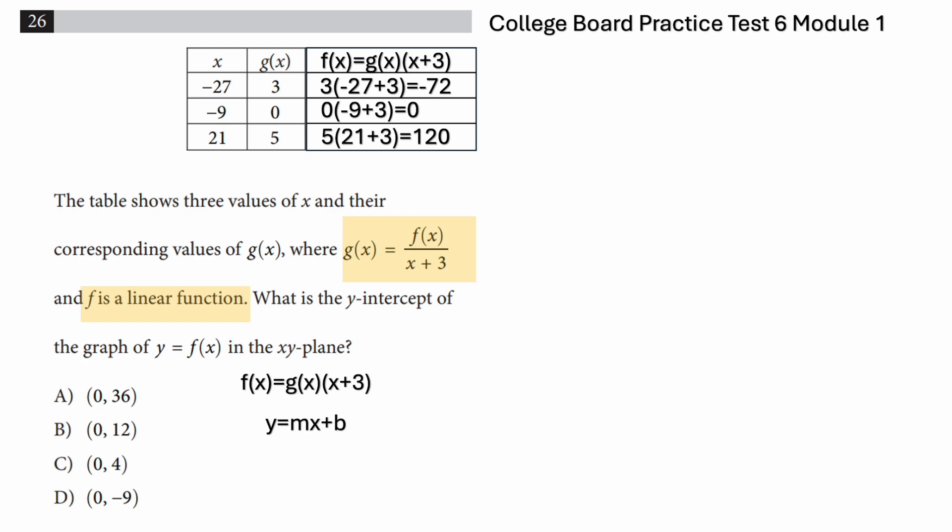So I'm going to write this separately in a table just to look organized. We have x = -27 and corresponding y or f(x) is -72. When x is -9, y is 0, x is 21, y is 120. Now again, we need just two points to graph this equation.